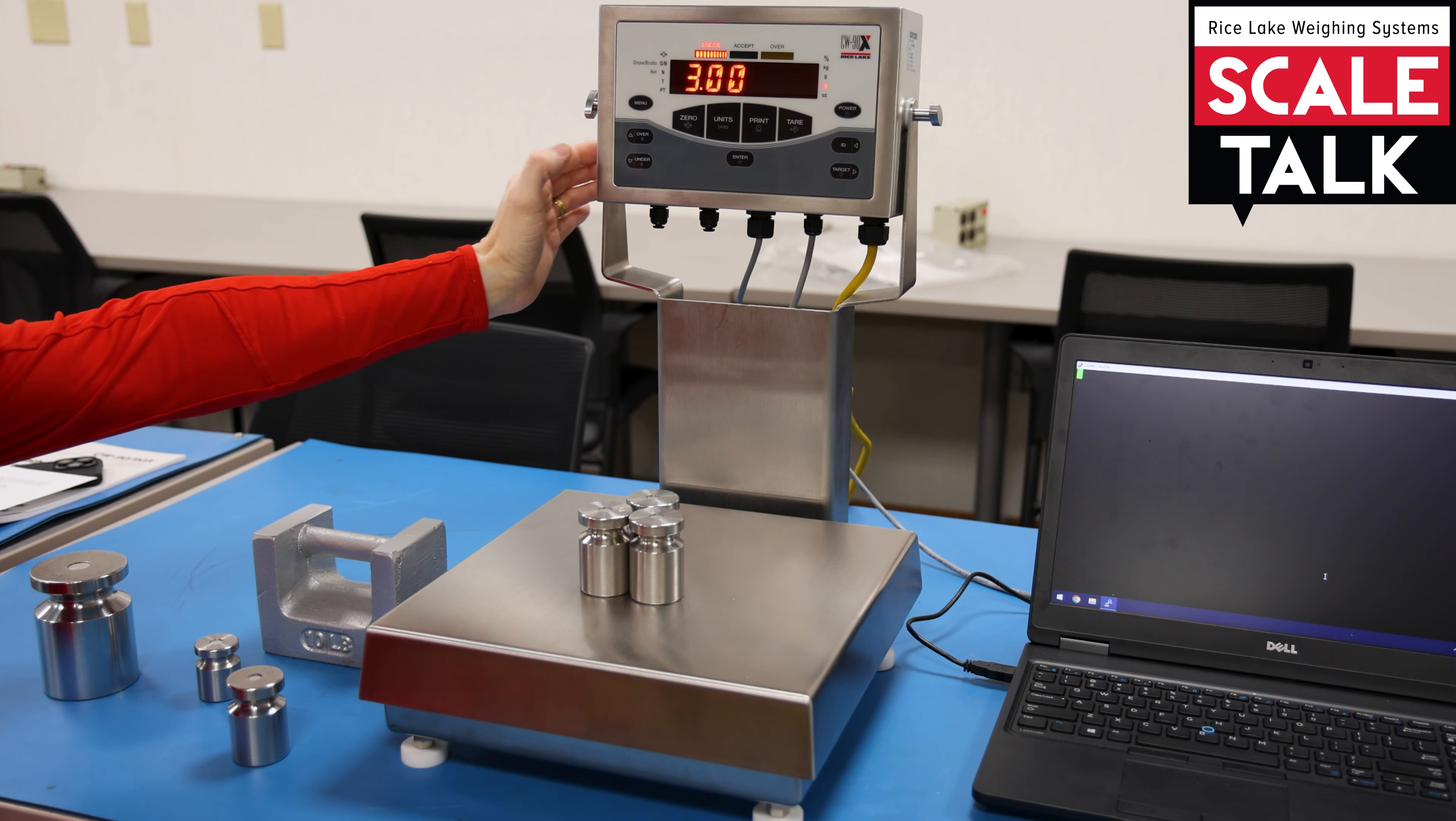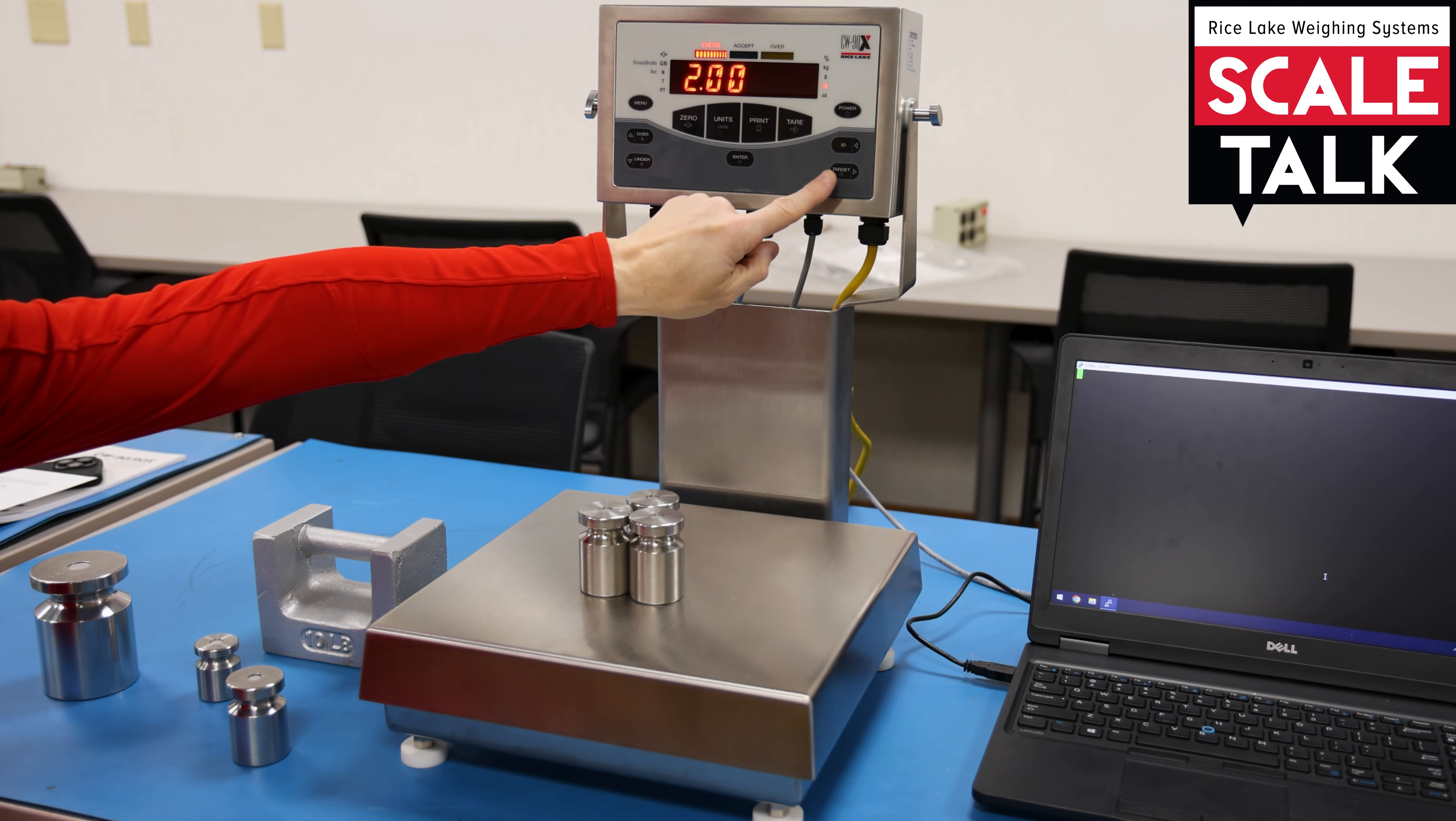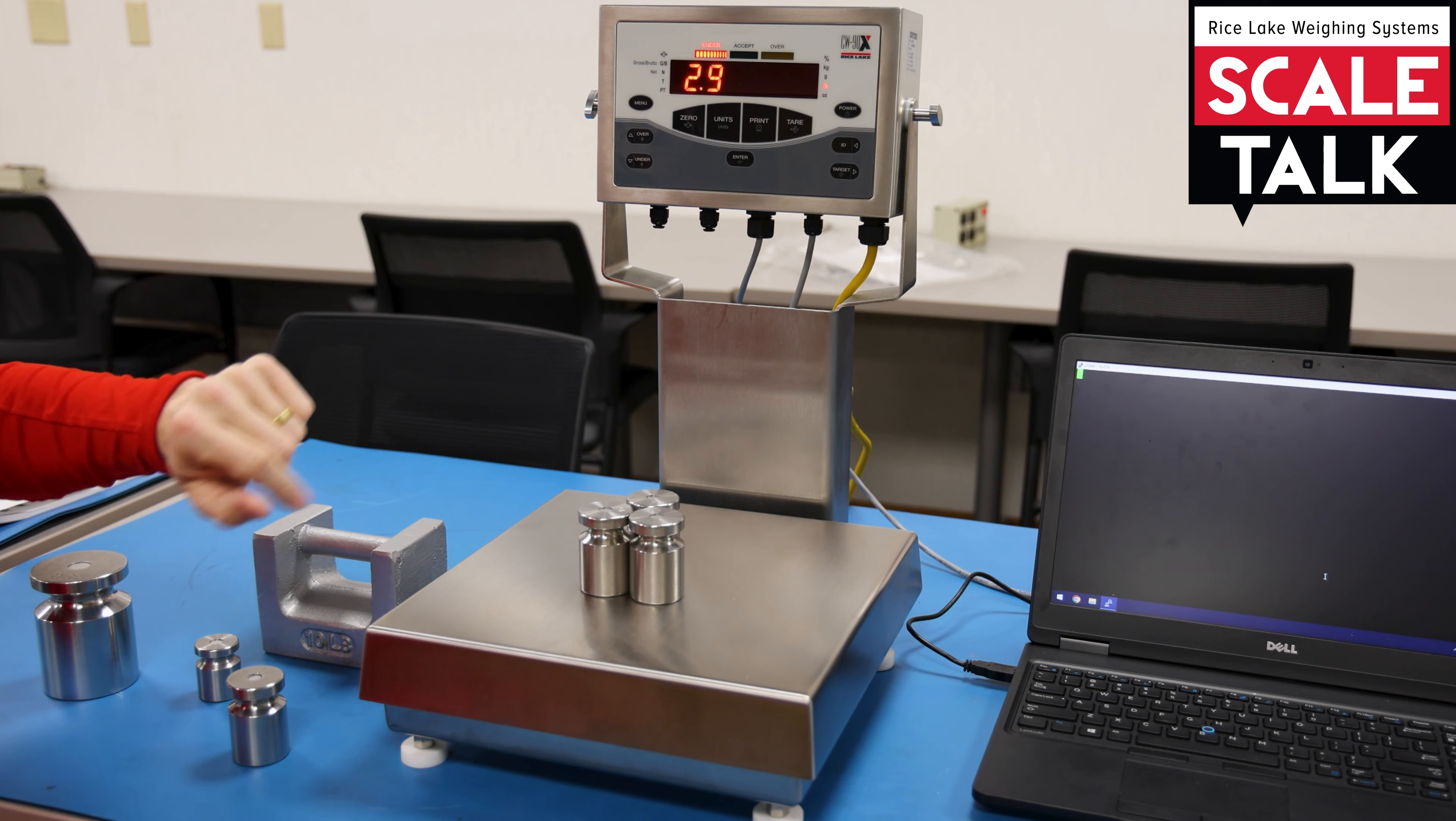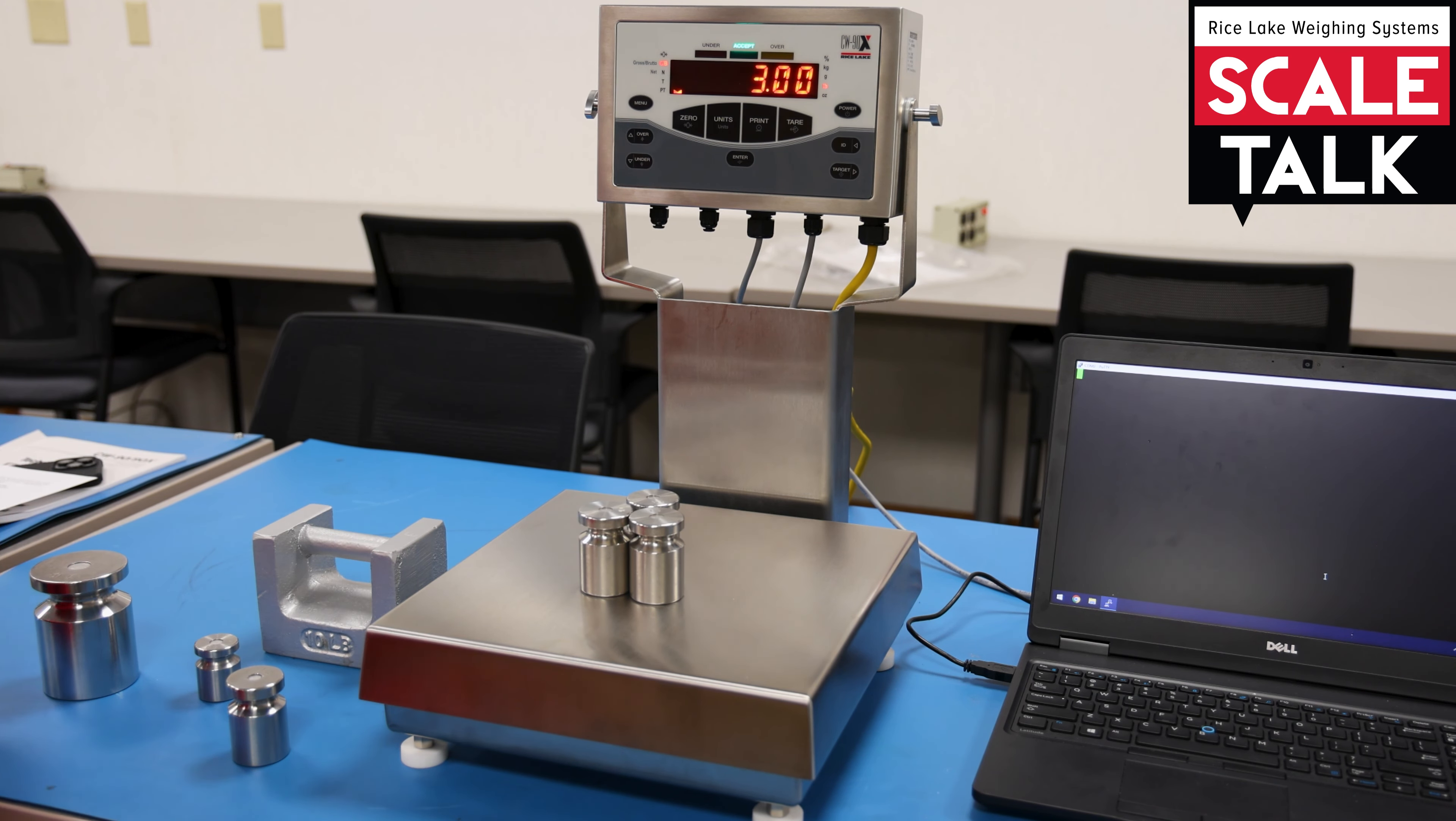So perhaps I go in to my under value and I set this for 2.9 and hit enter a couple of times to get back out. And now three is accepted.